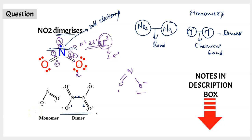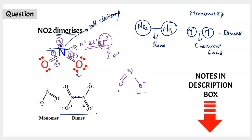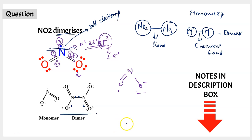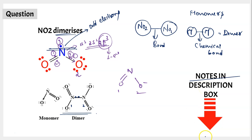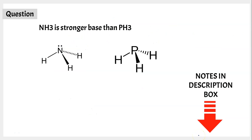NO2 dimerizes due to the presence of an odd electron in order to stabilize itself. If you want a database of all these questions from P-block elements, the link will be included in the description box below — complete notes of reasoning-based questions in P-block elements. Let's move on to the next question.